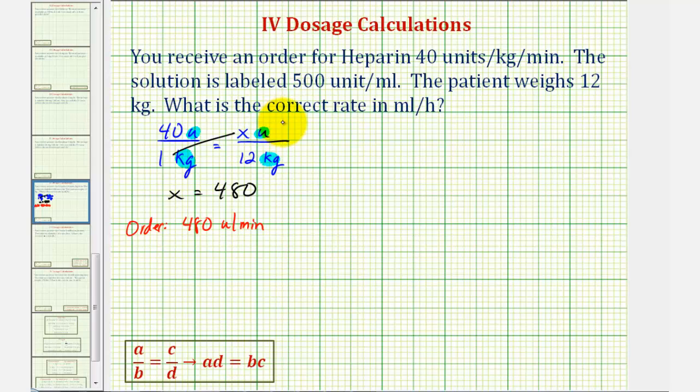But because we're looking for the flow rate in milliliters per hour, we'll have to convert this to number of units per hour, rather than units per minute. We can do this using another proportion. 480 units to one minute is equal to an unknown number of units, we'll call it y units, to one hour.